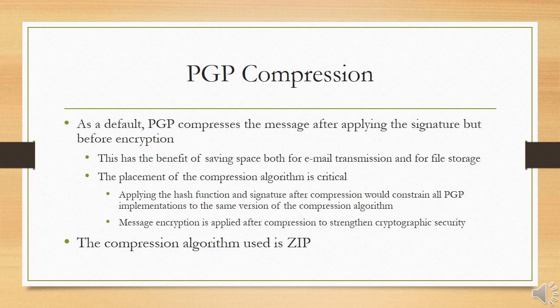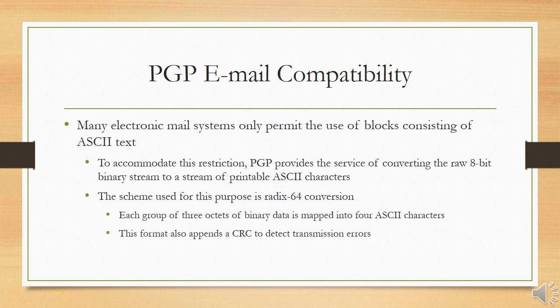Even if one were willing to dynamically generate a recompressed message for verification, PGP's compression algorithm presents a difficulty: the algorithm is not deterministic. Various implementations achieve different trade-offs in running speed versus compression ratio and produce different compressed forms. However, these different compression algorithms are interoperable because any version can correctly decompress the output of any other version. Applying the hash function and signature after compression would constrain all PGP implementations to the same version of the compression algorithm. Message encryption is applied after compression to strengthen cryptographic security, because the compressed message has less redundancy than the original plaintext, making cryptanalysis more difficult. The compression algorithm used is ZIP.